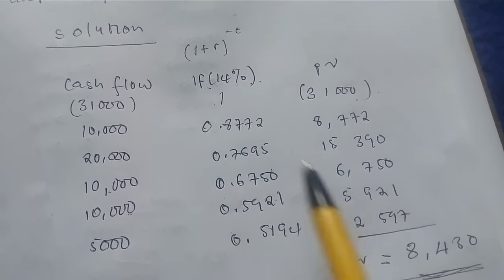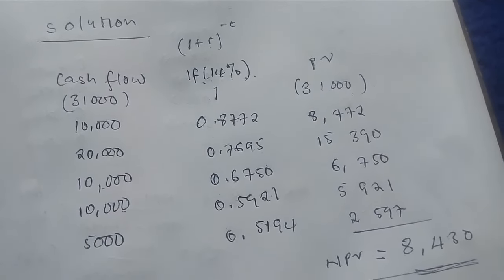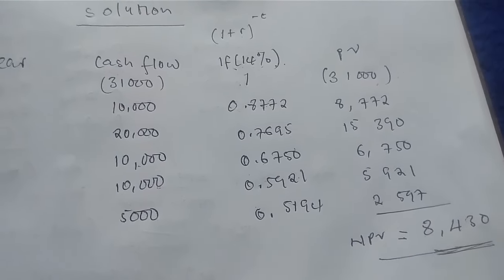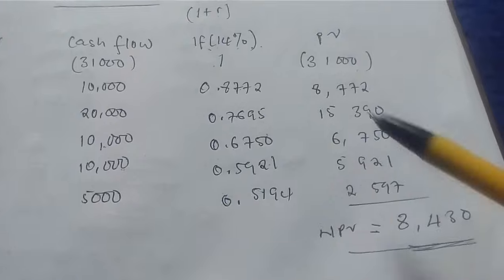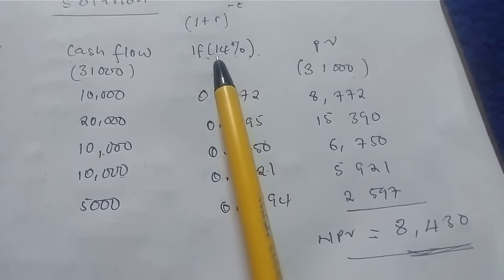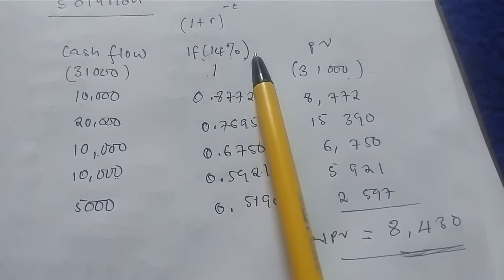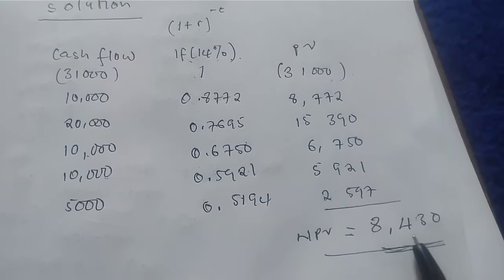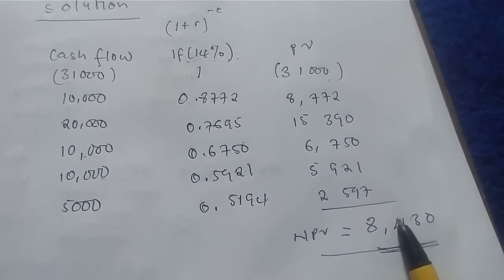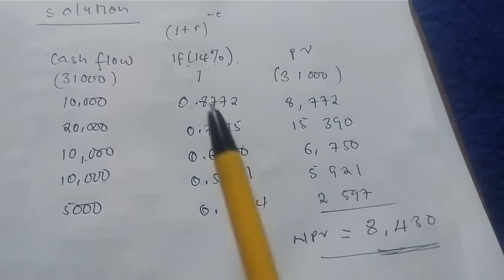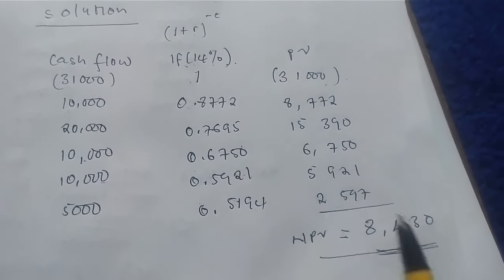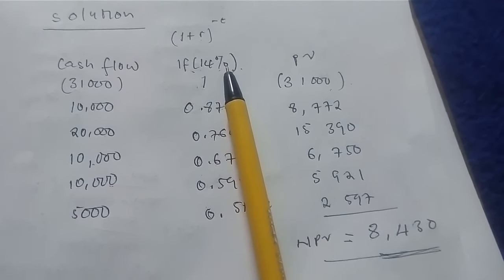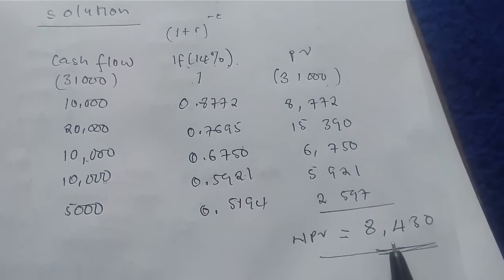In order for us to find that rate, we usually carry out the trial and error approach. The first step is we have to understand the relationship between the discounting rate, or the cost of capital, or the required rate of return, and the net present value. If you find the NPV is positive, in order to reduce this number to zero we have to increase the interest factor. That's the relationship — increasing the interest factor will lead to a reduction in the net present value.